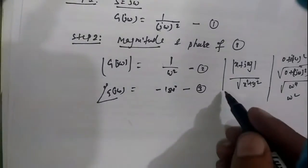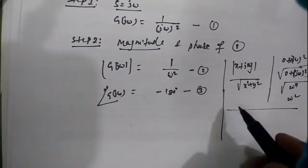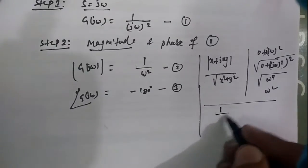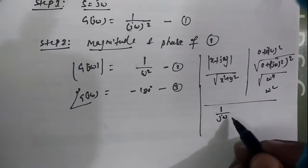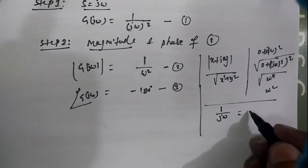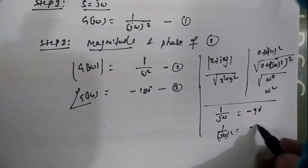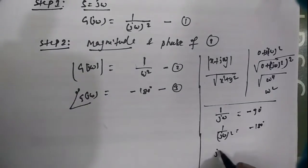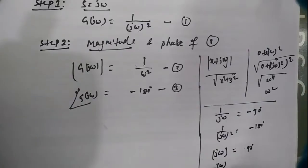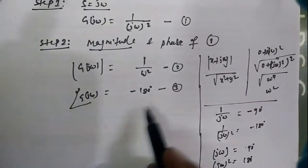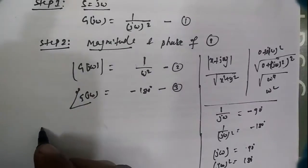As discussed in the first lecture on drawing polar plots: if the transfer function is 1/(jω), the angle is −90°. If it is 1/(jω)², the angle is −180°. If it is jω in the numerator, the angle is +90°, and for (jω)² it is +180°. So for G(s) = 1/s², the angle is −180°.